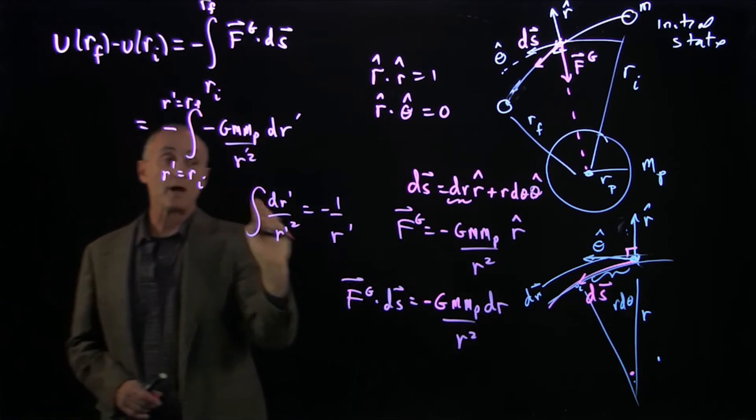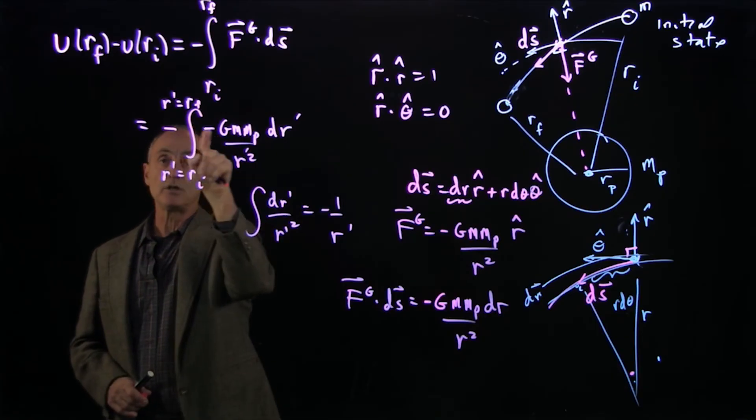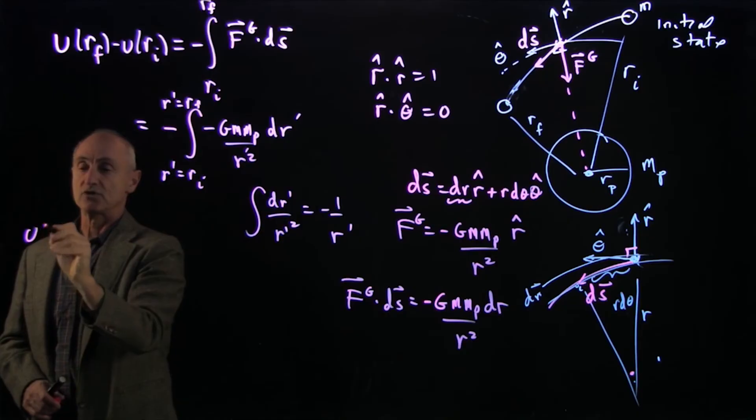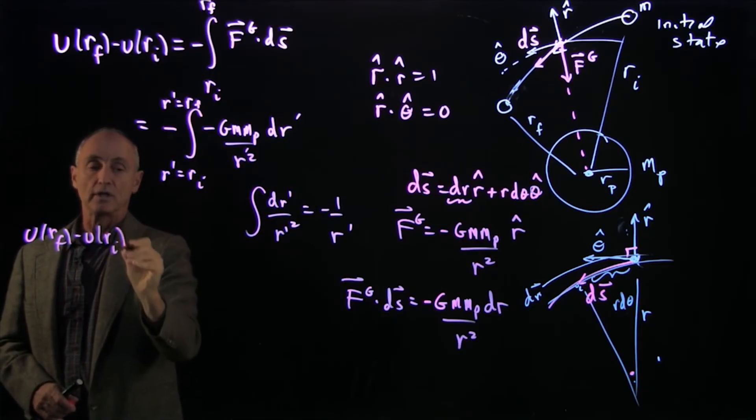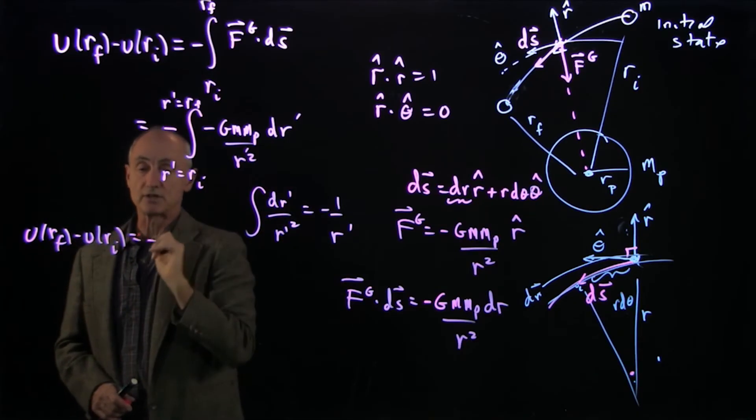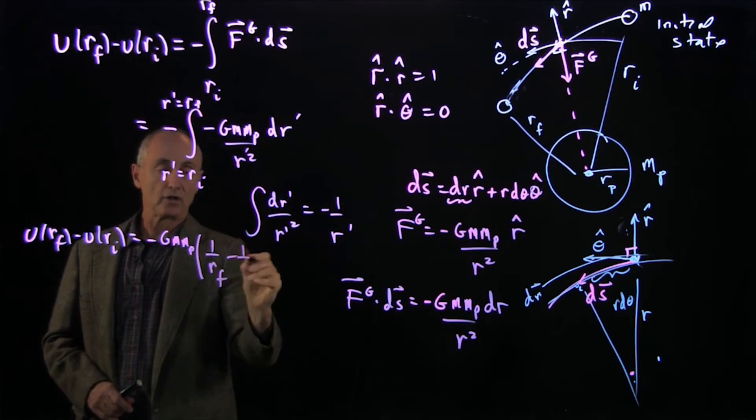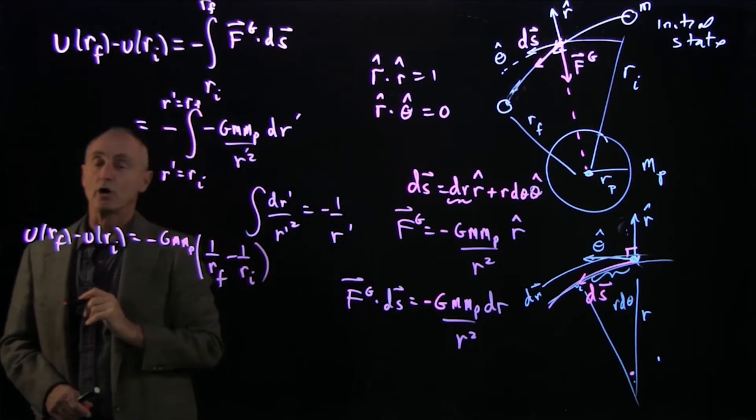There's going to be a third minus sign, because the integral of dr over r prime squared is minus 1 over r prime. So there would be three minus signs, one from the definition, one from the scalar product, and one from the integration. So we get U(rf) minus U(ri) equals, three minus signs give an overall minus sign, G mp m times (1 over rf minus 1 over ri).